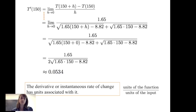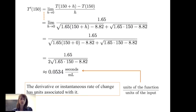We need to note that the derivative — the instantaneous rate of change of time with respect to volume at 150 milliliters — has units associated with it. Namely, it's the units of the function time divided by the units of the input volume. So the units associated with the derivative are seconds per milliliter.